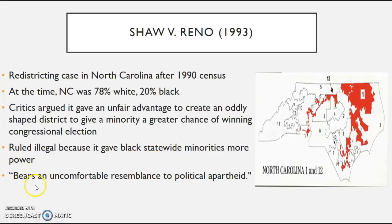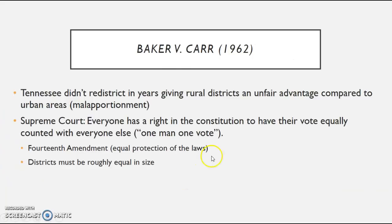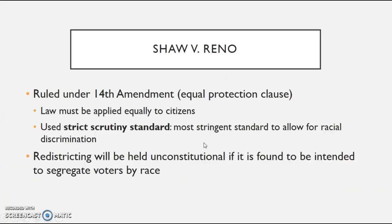The Supreme Court ruled the district illegal because it gave Black statewide minorities more power. One justice remarked that it 'bears an uncomfortable resemblance to political apartheid.' The case was ruled on the basis of the Equal Protection Clause — every vote needs to be equal, and in this case District 12 voters were given an unfair advantage. Race was used as the primary factor in drawing the district, which is not permitted.